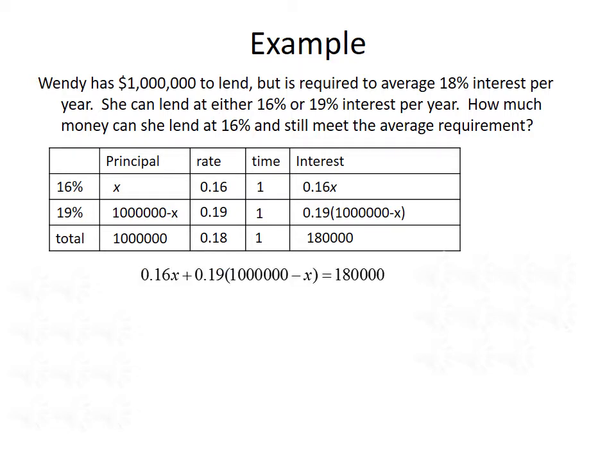Now we need to use the information in the table to create an equation that we can solve. We want to find out how much money could be lent at both interest levels and still meet the average requirement of 180,000 interest. So if we add the interest from 16% to the interest for 19%, that should equal the total interest. Our equation is 0.16X plus 0.19 times 1 million minus X equals 180,000.